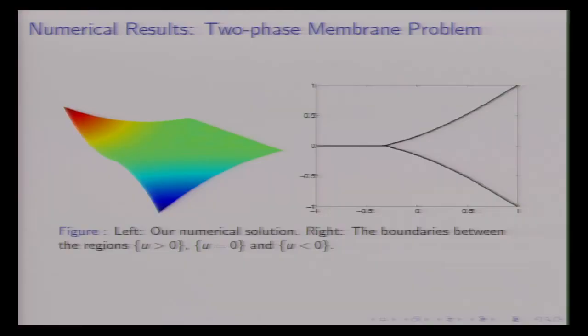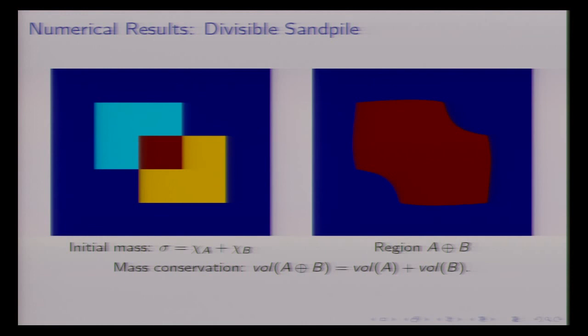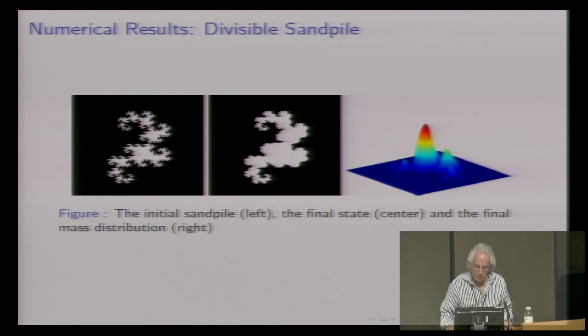Here's the two-phase Hele-Shaw: there's a boundary between positive, zero, and negative. And here's the sand pile. You have mass conservation. The initial state is on the left and the final state is on the right, and we get that fast using these PDE ideas.